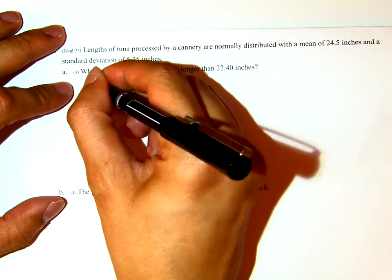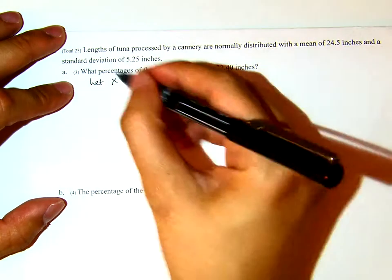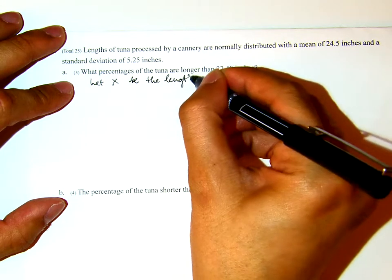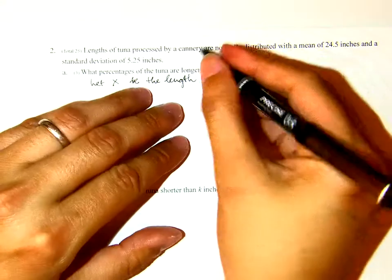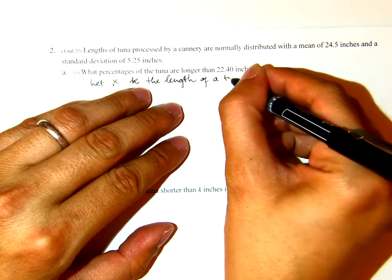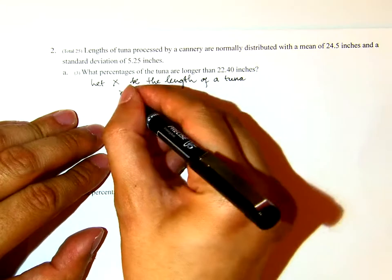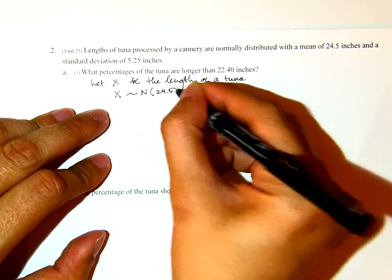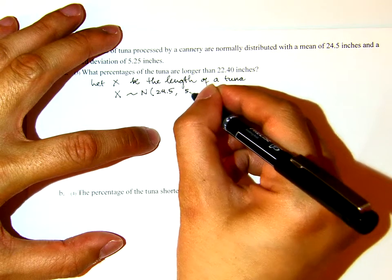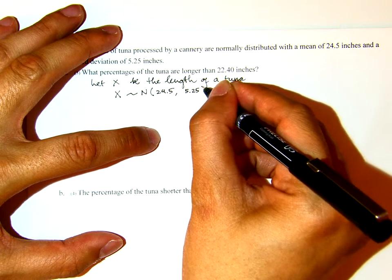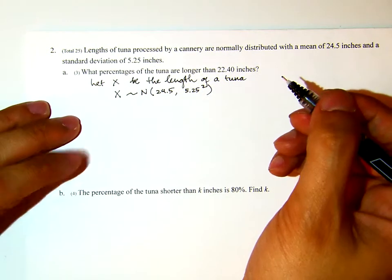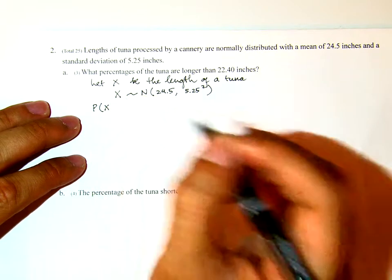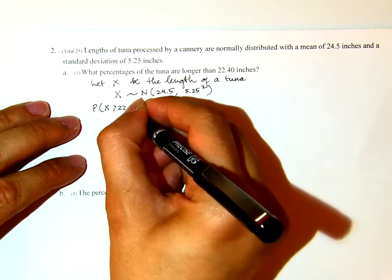Let x be the length of a tuna. According to the information given, x is normally distributed with mean 24.5 and standard deviation 5.25 — I put a square there for variance notation. The question is: find the probability or percentage that the length of a tuna will be longer than 22.40 inches.